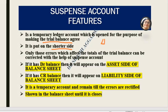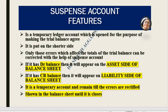The trial balance has two columns: debit and credit. Because these two don't match, we identify which side is smaller. If the debit side is small, we add the suspense account there; if the credit side is small, we add it there. If the suspense account has a debit balance, it appears on the asset side of the balance sheet. If there is a credit balance, it goes on the liability side. The suspense account remains in the balance sheet until all errors are rectified.